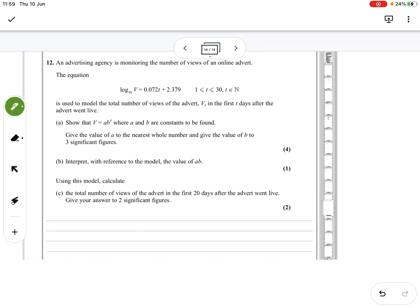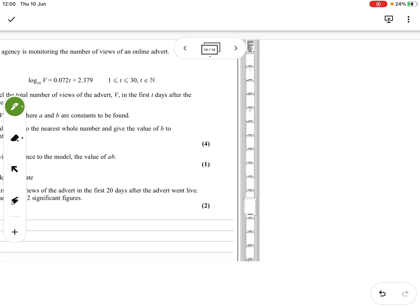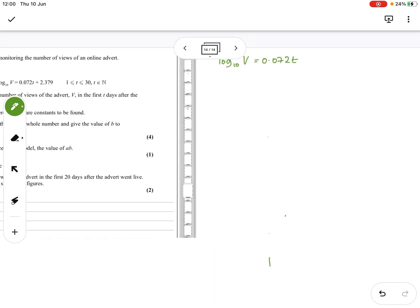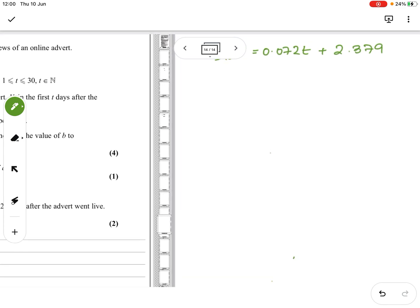This is used to model the total number of views of the advert in the first T days after it went live. Show that V equals AB to the T. We've been doing it going that way to that, it's just the other way around, so it's just playing with your logs. So we have got log to the base 10 of V equals 0.072T plus 2.379, and we need to make it back to V equals AB to the T.